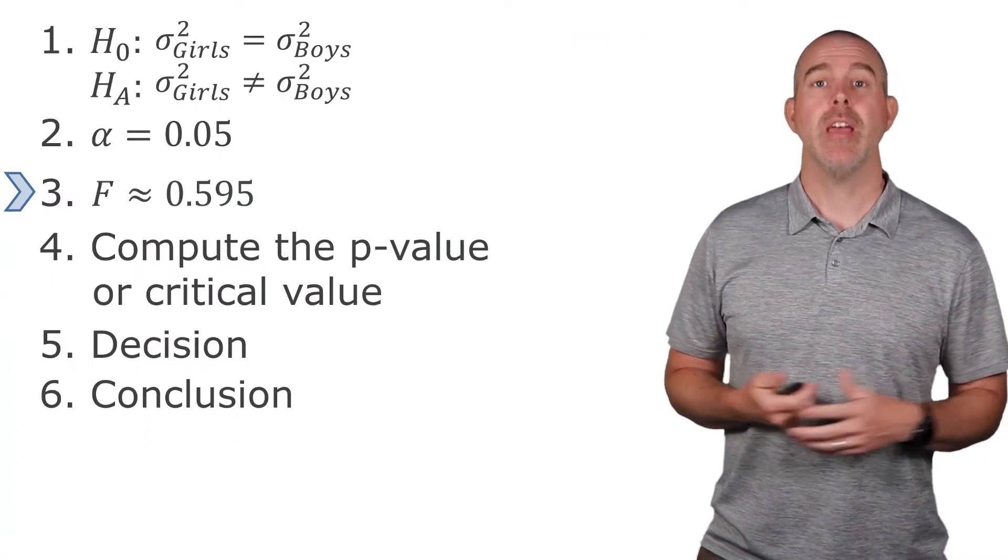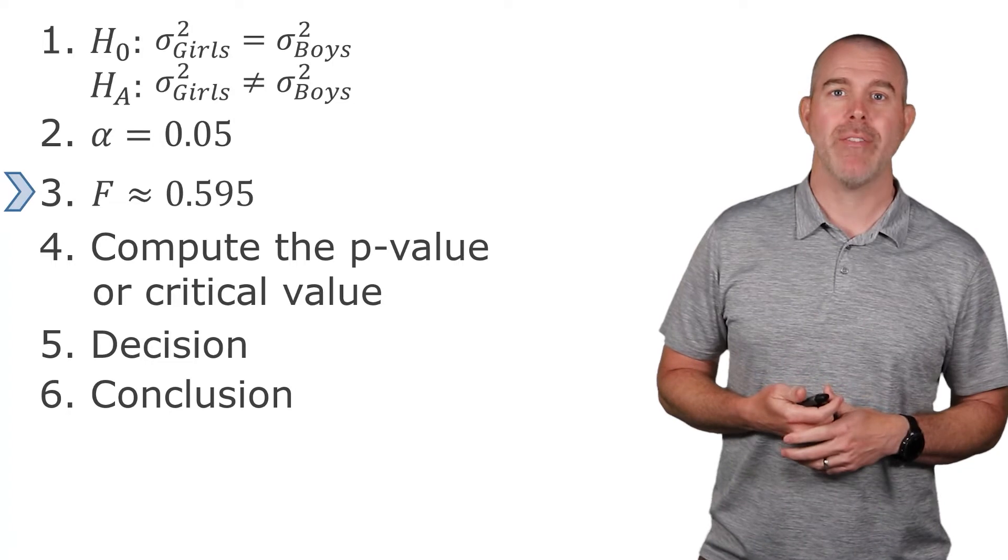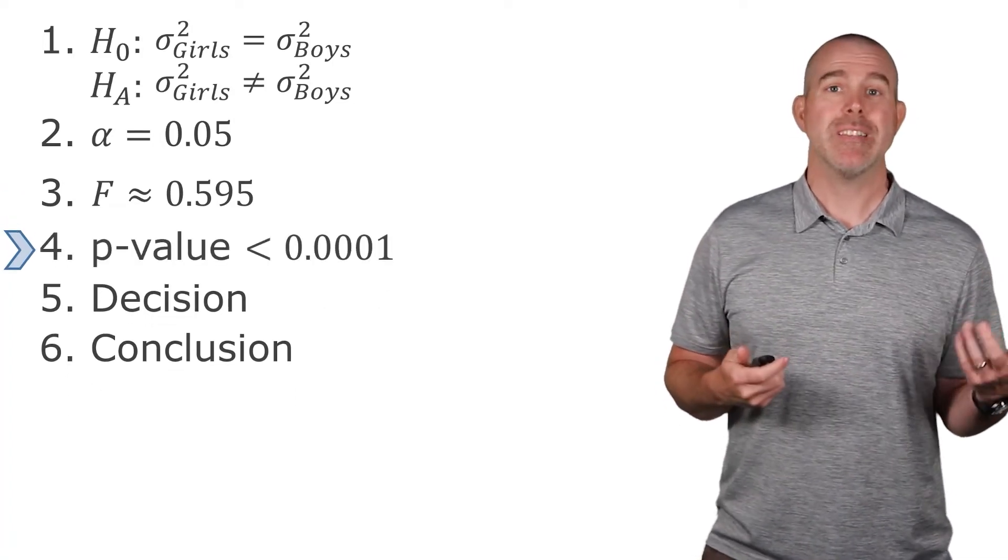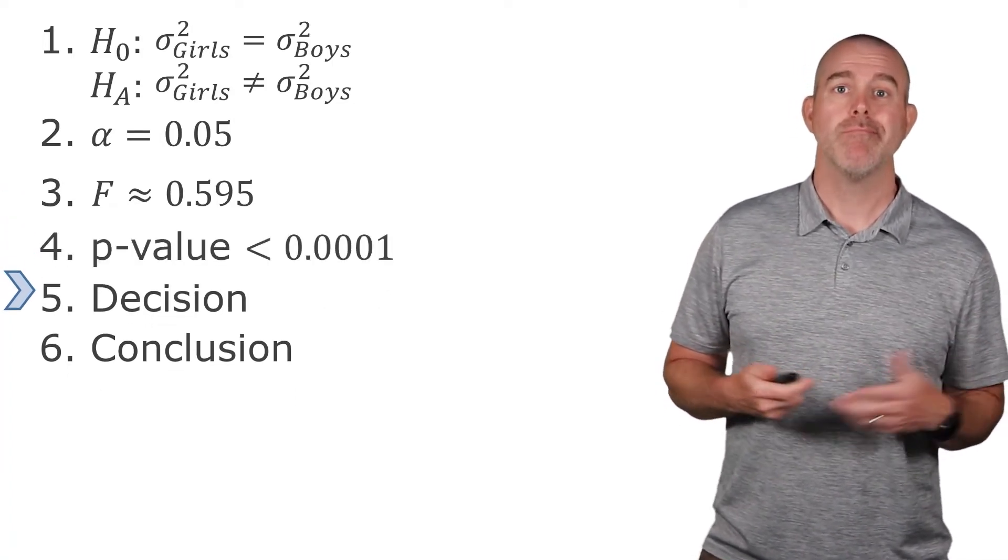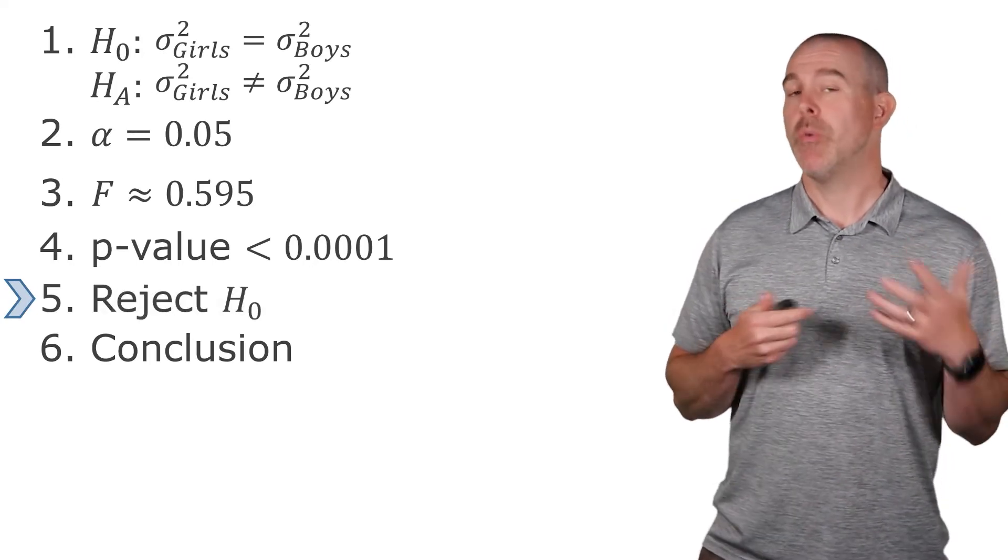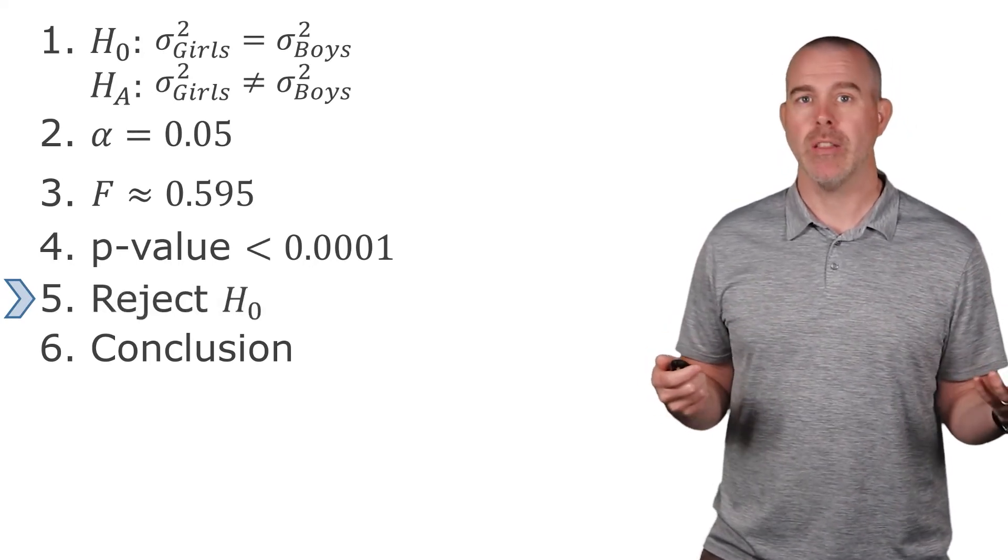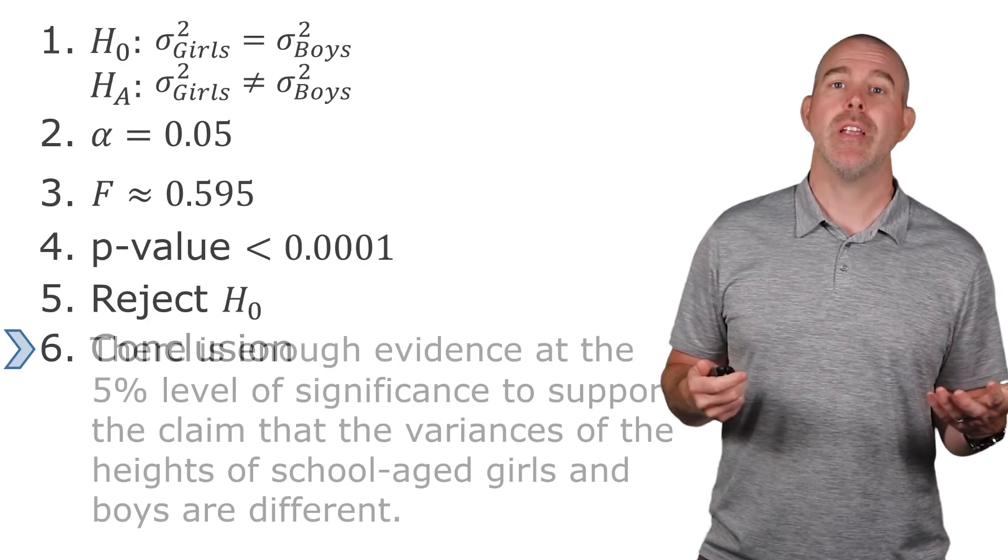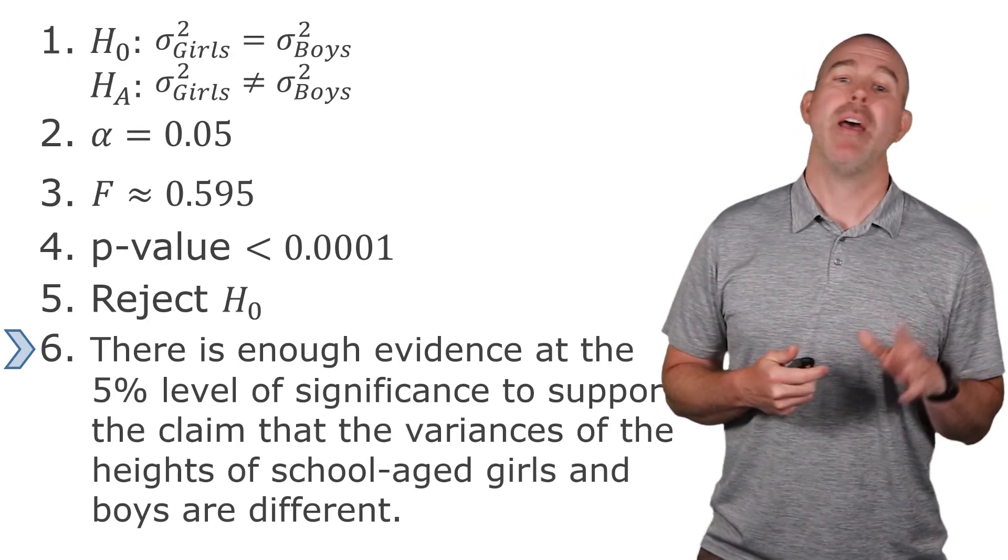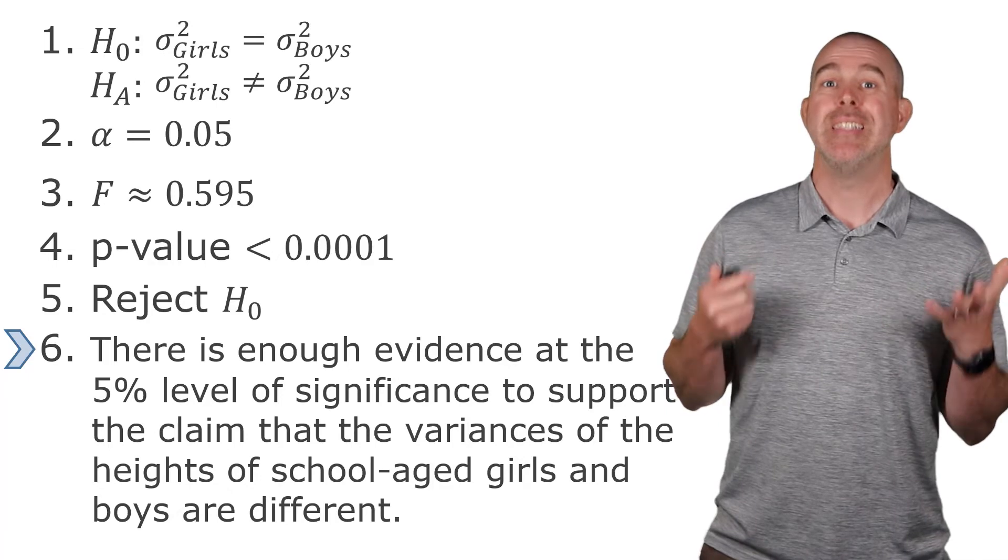Our F statistic, then, is about 0.595. The p-value here, we get less than 0.0001. So our decision, we would reject the null hypothesis. We got a low p-value. Our conclusion, then, there is enough evidence to support the claim that their variances are different.